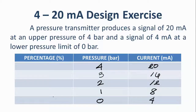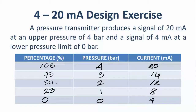For the percentage column, the lower limit is 0% and the upper is 100%. In between we have 50%, and then 25% between 0 and 50, and 75% between 50 and 100. This gives us our complete 5-point calibration: at 0% we have 0 bar and 4 mA; at 25%, 1 bar and 8 mA; at 50%, 2 bar and 12 mA; at 75%, 3 bar and 16 mA; at 100%, 4 bar and 20 mA.